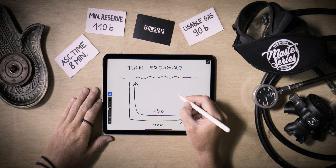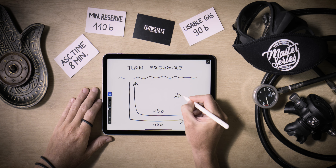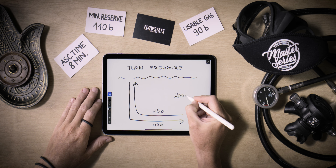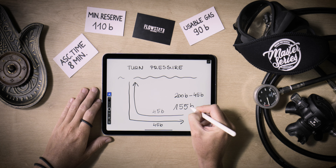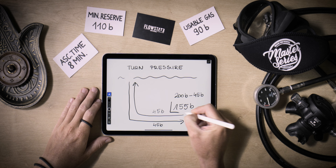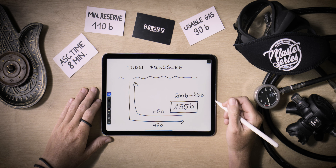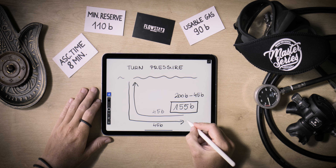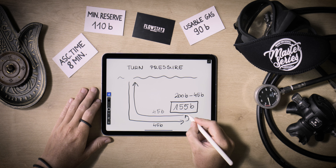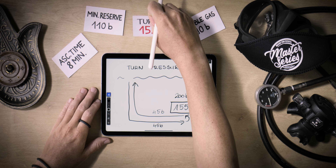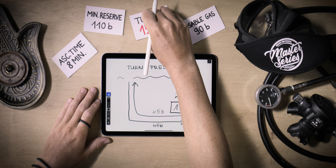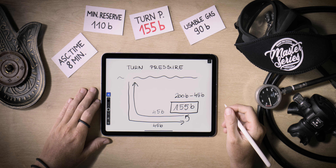The rule of halves entails assigning half of the usable gas for the outbound phase and the remaining half for the inbound phase. Consequently, the turn pressure is determined by subtracting half of the usable gas from the total available gas. In our example, the turn pressure would be 155 bars. Once a team member reaches this pressure, the dive should be turned, effectively retracing your path and heading back to the entry point.